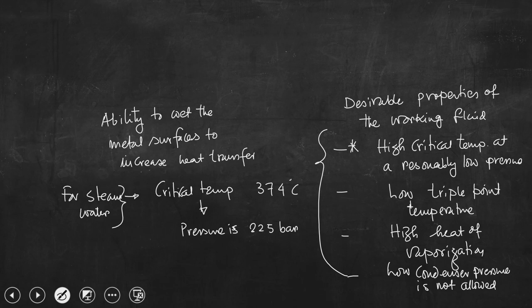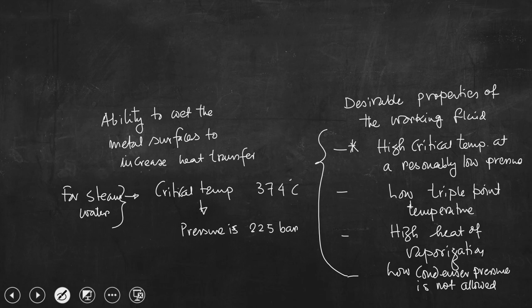Regarding low triple point temperature: why do we need high critical temperature? Because if we increase the critical temperature, the maximum temperature at which heat is transferred — when energy from combustion is transferred to the working fluid — will be very high. If the critical temperature is very high, it is highly possible to have phase change at a high temperature, and that process can be maintained even at a high temperature. So we are trying to mimic or get closer to the Carnot cycle.